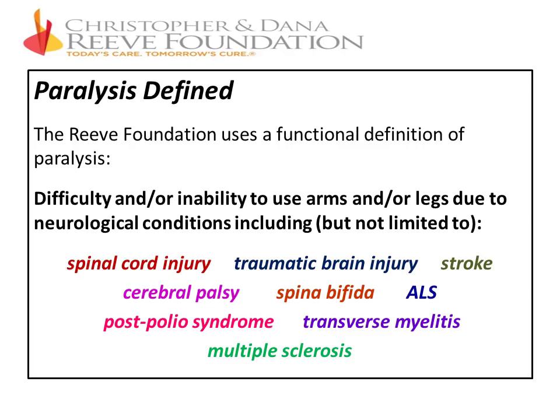The Reeve Foundation uses a functional definition of paralysis, similar to that used by the World Health Organization: difficulty and/or inability to use arms and/or legs due to neurological conditions, including but not limited to spinal cord injury, traumatic brain injury, stroke, cerebral palsy, spina bifida, ALS, post-polio syndrome, transverse myelitis, multiple sclerosis, and other conditions.